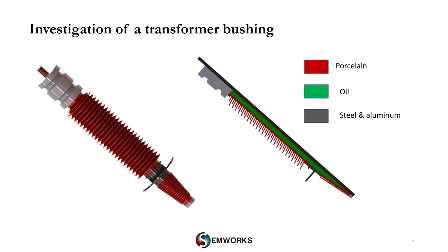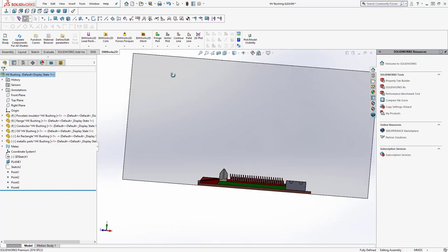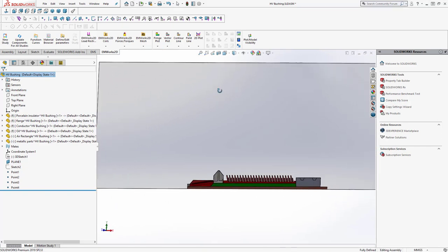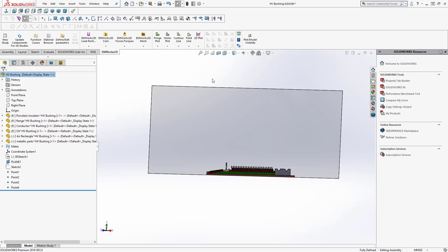Now we are going to start our investigation of a transformer bushing system. We use EMWorks2D, our 2D solution, to solve this model because it has rotational symmetry. This can help save a lot of time and effort. Let's have a look at both EMS and EMWorks2D in their environment inside SOLIDWORKS. As we said earlier, both EMS and EMWorks2D are fully integrated inside SOLIDWORKS and Autodesk Inventor.